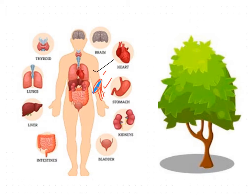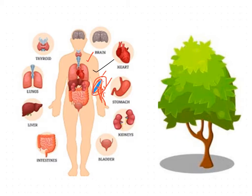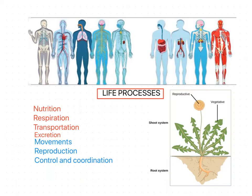Some molecular movements of the same kind happen to reorganize the injured part. If this rearrangement does not happen, the blood will ooze out continuously and the organism will not be alive. Such kind of mechanisms — seen both in animals and in plants — going on inside organisms to sustain life are called life processes.